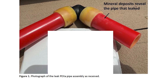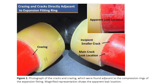Figure one: photograph of the leaking PEX-A pipe assembly as received. Figure two: photograph of the cracks and crazing found adjacent to the compression rings of the expansion fitting. A magnified representation shows the apparent leak location.